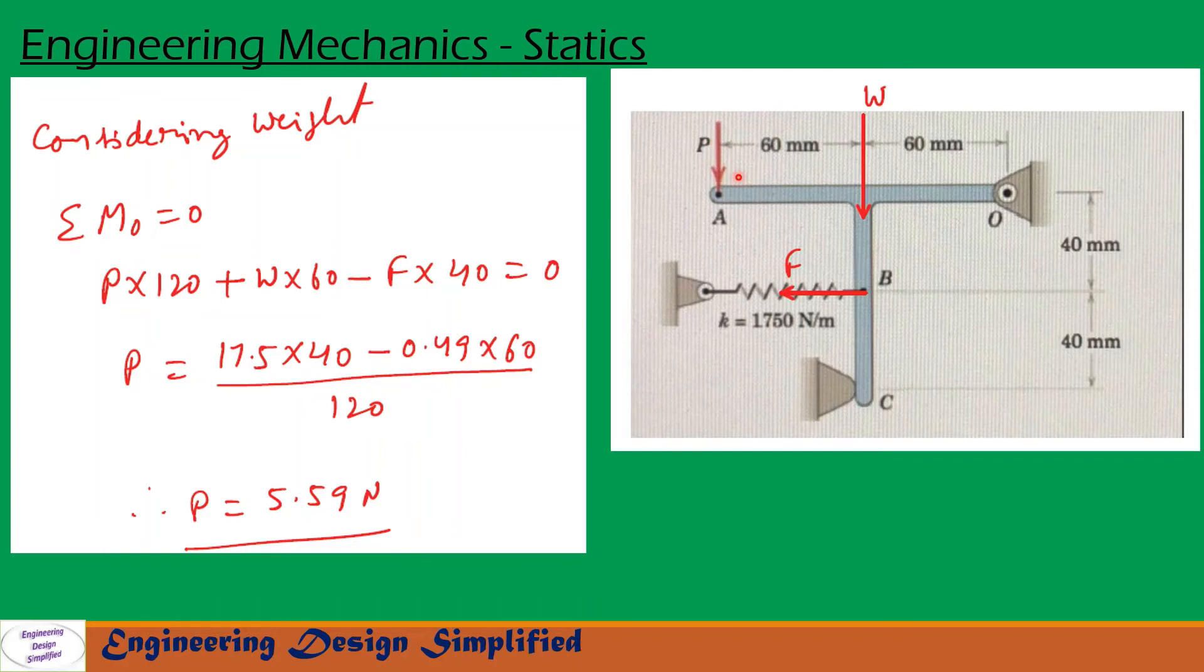This weight P and the force P and weight W will create counterclockwise moments, and the force F will create clockwise moment about O. So P into 120, that is P into 60 plus 60, that is 120, plus W into 60, this W into this distance, minus F into 40 equal to zero.